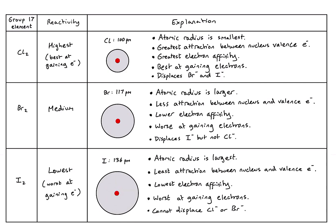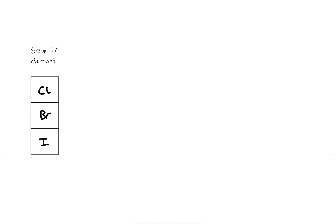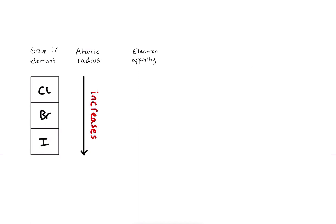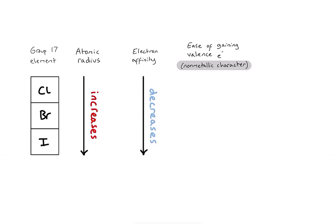To summarize the explanation: we have our group 17 elements — chlorine, bromine, and iodine. The atomic radius increases going down the group, and as a result the electron affinity of those elements decreases down the group. Electron affinity tells us how easily that atom gains valence electrons.